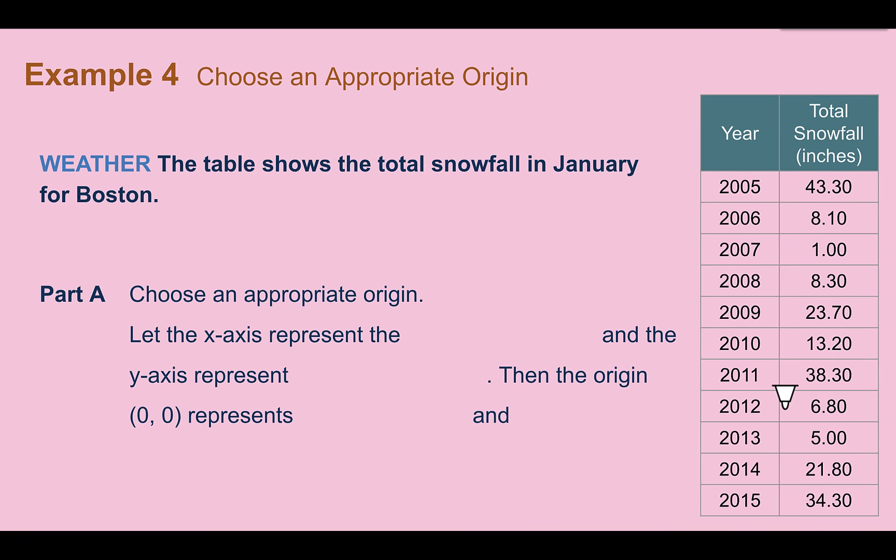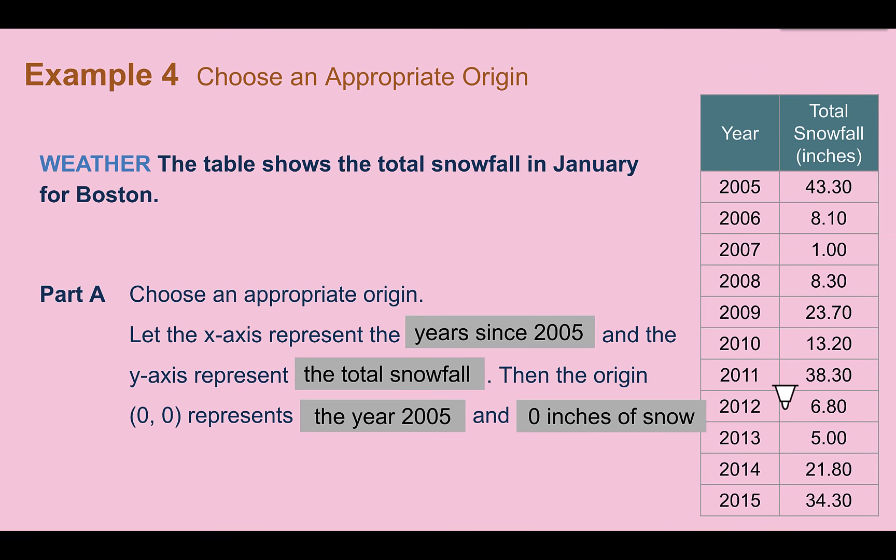Example 4, choose an appropriate origin. The table shows the total snowfall in January for Boston. Part A, choose an appropriate origin. Let the x-axis represent the years since 2005 and the y-axis represent the total snowfall. If we have these two things, then (0, 0), that origin represents the year 2005 and 0 inches of snow.